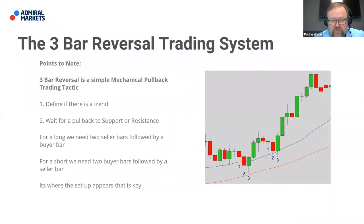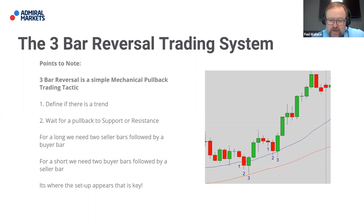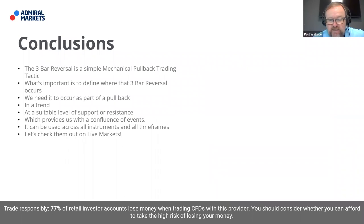To finish off: the three bar reversal is a simple mechanical pullback trading tactic. Step one: define if there is a trend. Step two: wait for a pullback to support or resistance. For a long, we need seller bars followed by a buyer bar; for a short, we need buyer bars followed by a seller bar. It's where the setup appears that is key — that's the element of subjectivity. If you can see price pulling back into the 20 period moving average or a static level of support resistance or a big round number, that is a nice confluence of events.